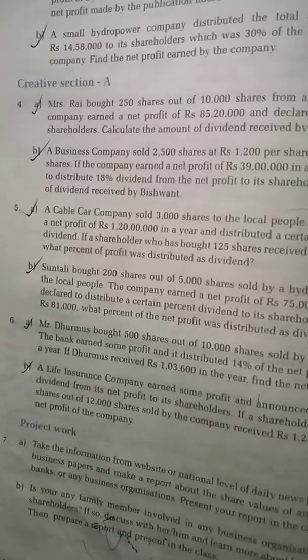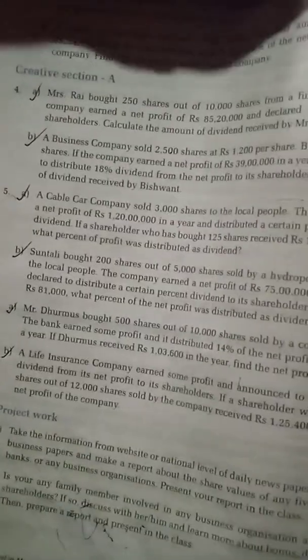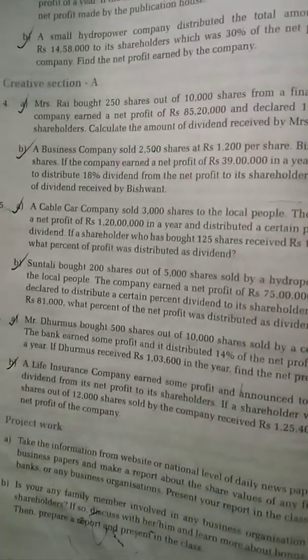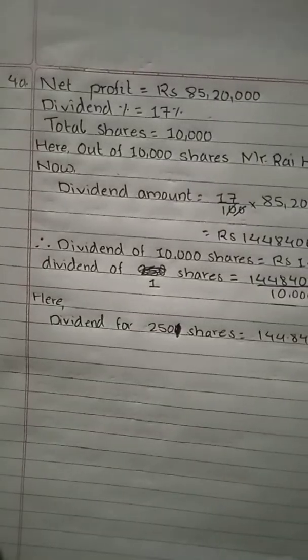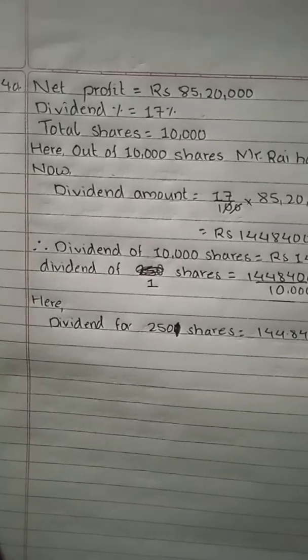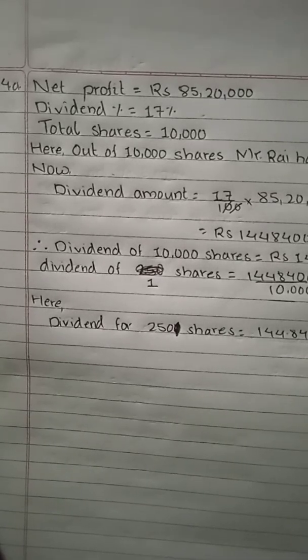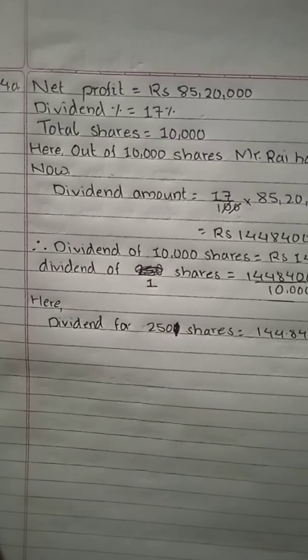Question five: Mr. Rai bought 250 shares out of 10,000 shares from a finance company. The company earned a net profit and distributed 7% dividend to its shareholders. Calculate the amount of dividend received by Mr. Rai.